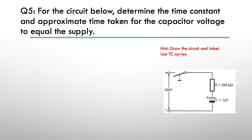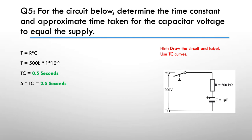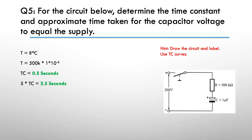Hint: draw the circuit, label it, and use your time constant curves. The time constant is 50k times 1 times 10 to the minus 6 — we had 1 microfarad — so the time constant is 0.5 seconds. The voltage across the capacitor will equal the supply voltage at five time constants; it gets there somewhere between five and six. We say five time constants, and six is also acceptable — so either 2.5 seconds or 3 seconds would be an acceptable answer.